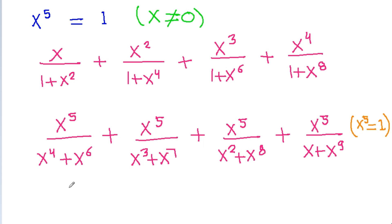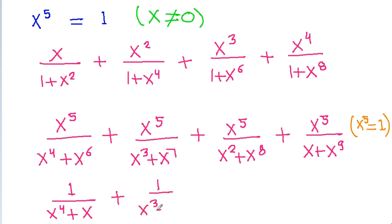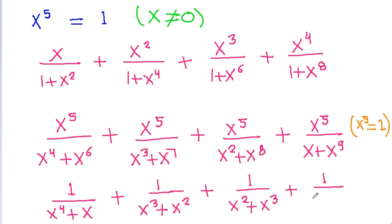So we get 1 by x power 4 plus x power 6, which is x power 5 into x, giving x plus 1. Then 1 by x cube plus x power 7 gives x square plus 1. Then 1 by x square plus x power 8 gives x cube plus 1. And 1 by x plus x power 9 gives x power 4.